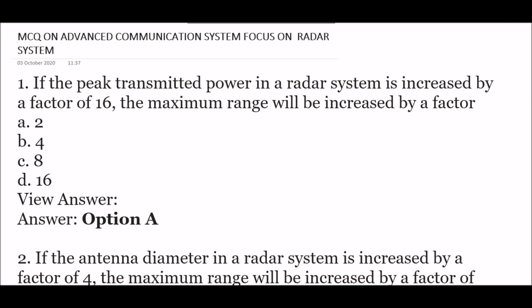The first question: if the peak transmitted power in a radar system is increased by a factor of 16, the maximum range will be increased by a factor of — option A: 2, option B: 4, option C: 8, option D: 16. The right answer is option A — 2. So if the peak transmitted power is increased by a factor of 16, the maximum range increases by a factor of 2.